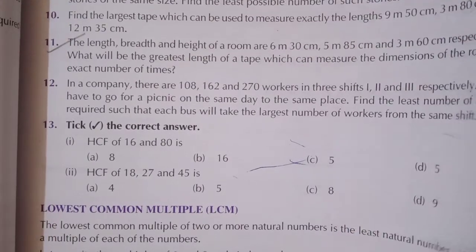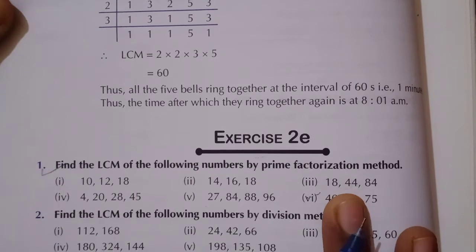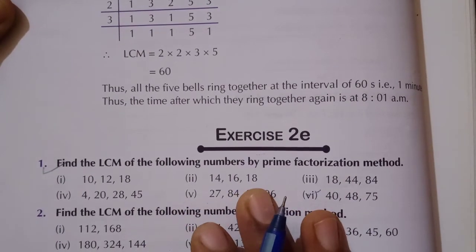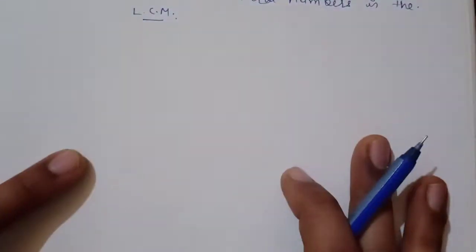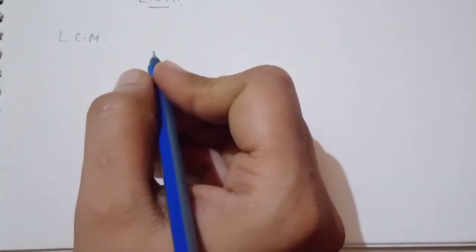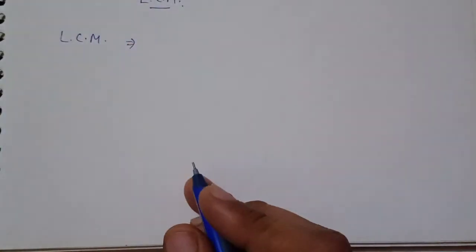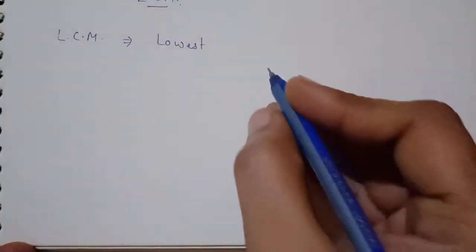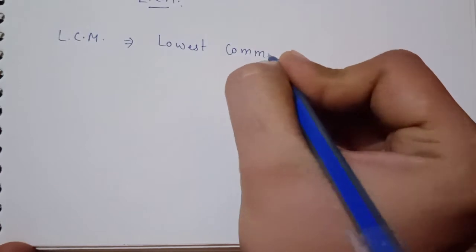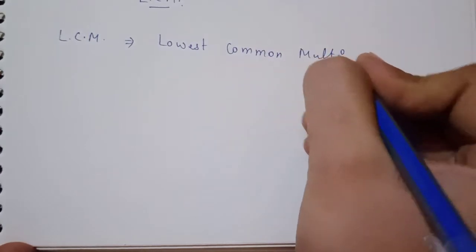Now I will start the next exercise, which is Exercise 2E. You can read the question: find the LCM of the following numbers by prime factorization method. You have to find out the LCM using the prime factorization method. First of all I would like to explain the term LCM. You will write the definition of LCM. LCM means the Lowest Common Multiple.